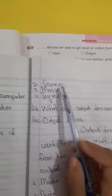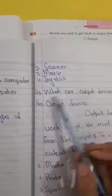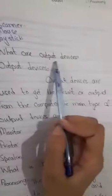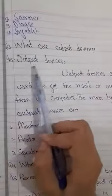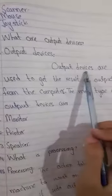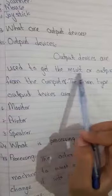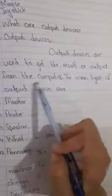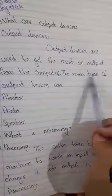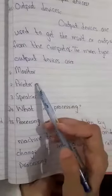Question number 3: What are output devices? First you give heading, then output devices are used to get the result or output from the computer. The main types of output devices are monitor, printer, and speaker.